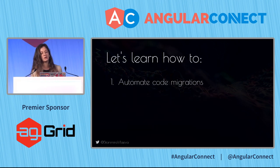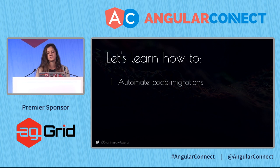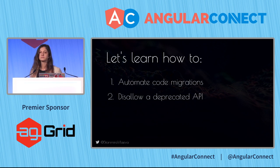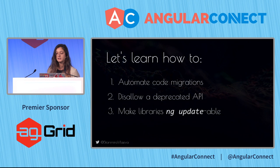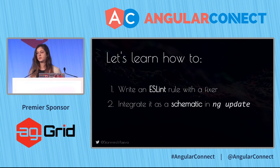Today we're going to learn how to automate our code migrations. If you have a library that you're authoring, we're going to learn how to write a migration script that your users can use. We also want to disallow using a deprecated API and make sure everyone in our organization switches to the new API. Finally, we're going to learn how to make an Angular library ng-updateable — specifically, we'll write an ESLint rule with a fixer, then integrate it as a schematic inside ng-update.